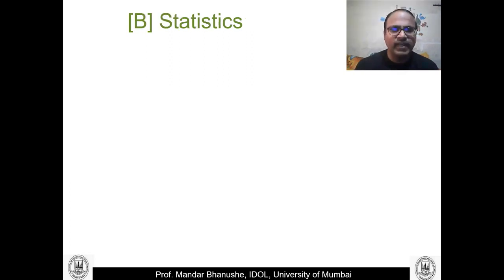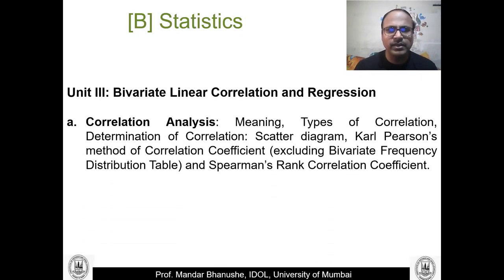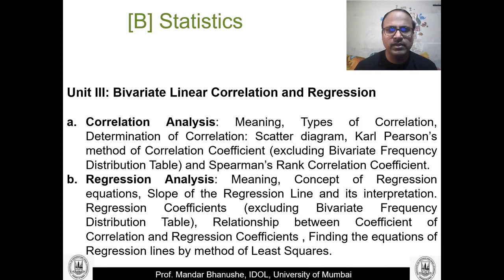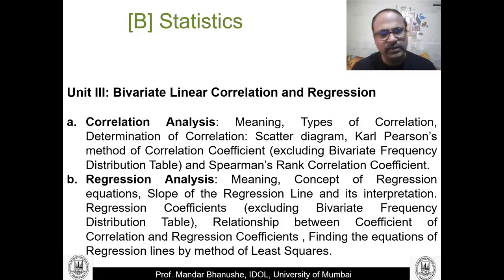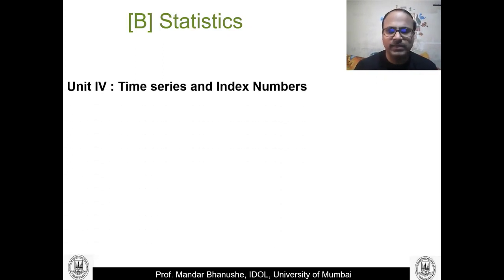In statistics, Unit 3 is on linear correlations and regressions — different types of correlations, calculating regression equations, slope and constants of regression equations, the relation between the correlation coefficient and the regression coefficient, and drawing regression lines using the least squares method.